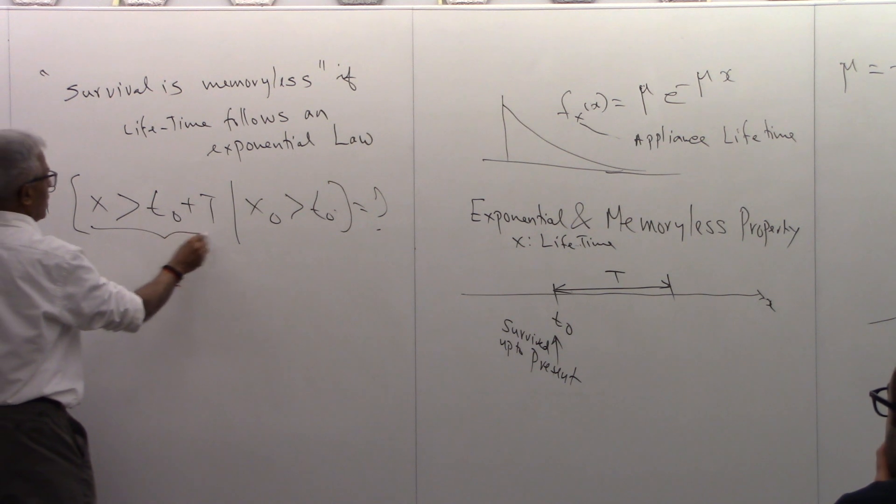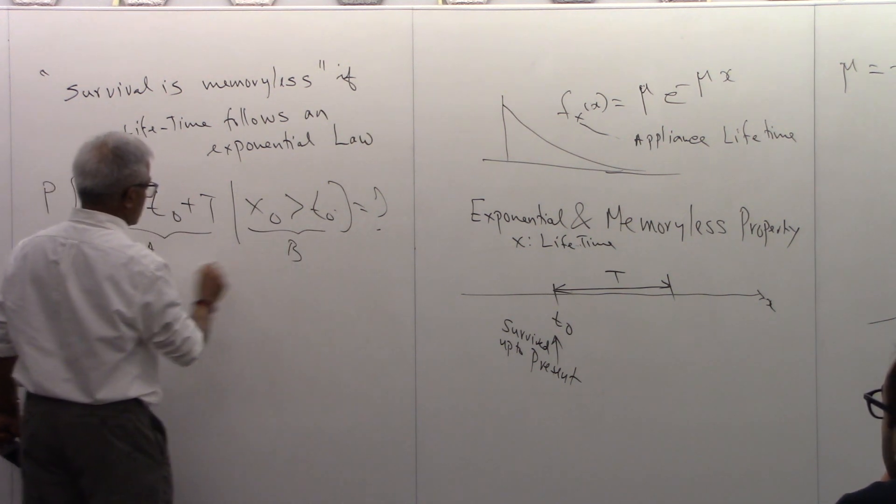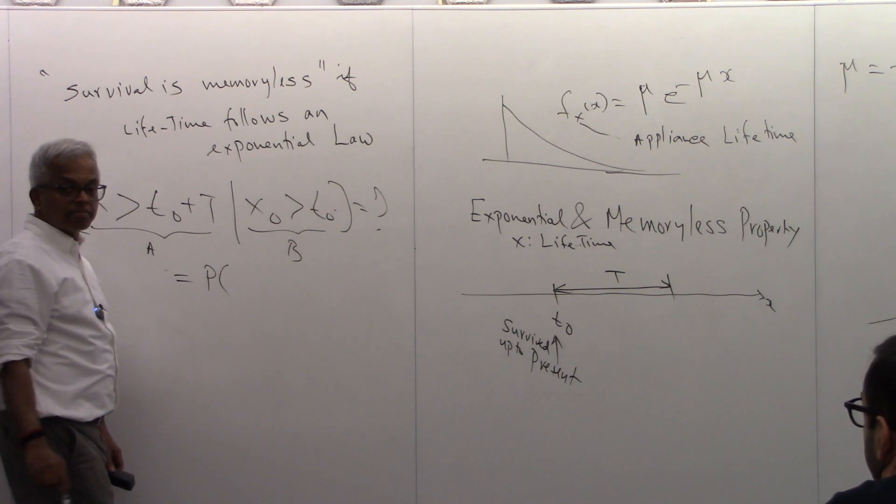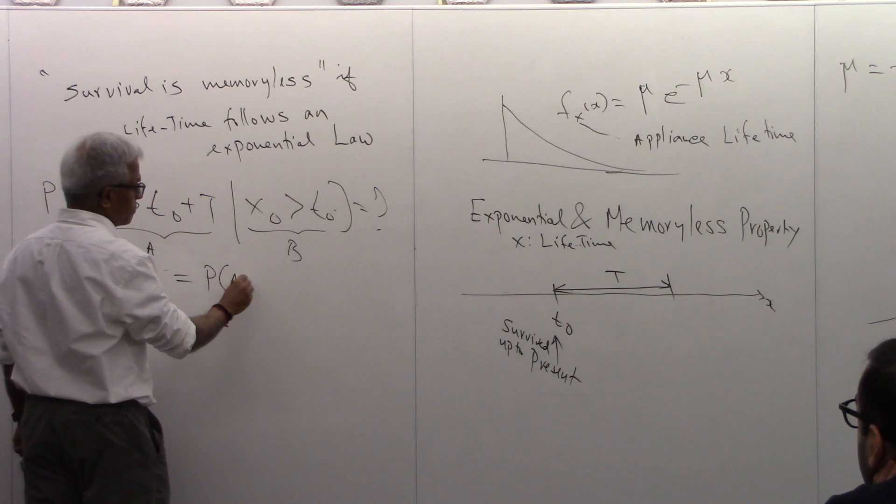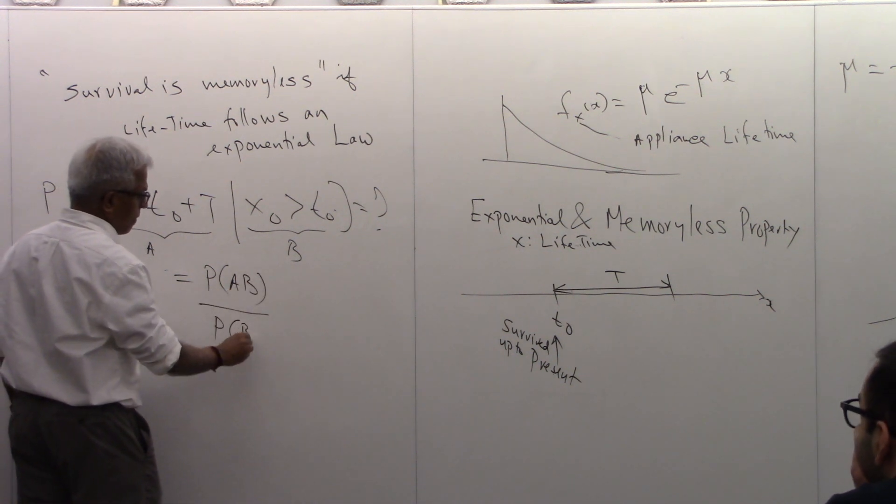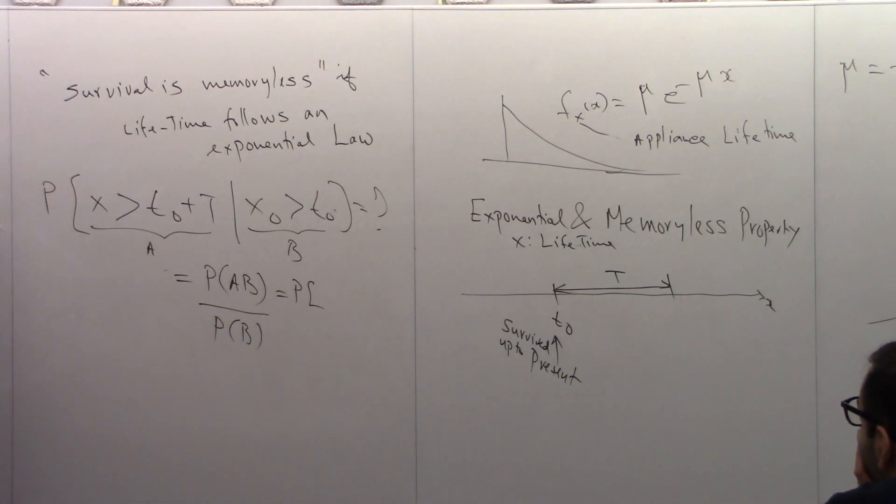So I'm going to compute this probability for you. You call this to be A. You call this to be B. So this is equal to probability of—what is A? A says x is greater than t naught plus t. B is x greater than t naught. Their intersection gives you A, which is x greater than t naught plus t.